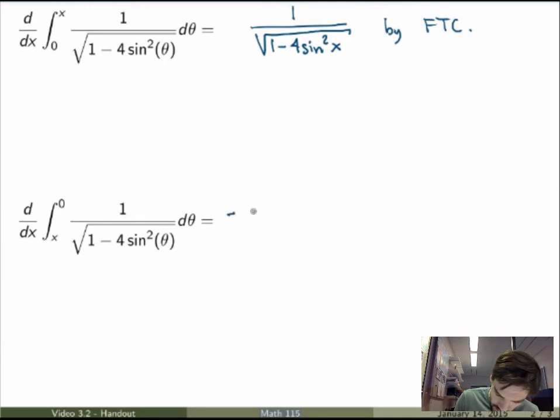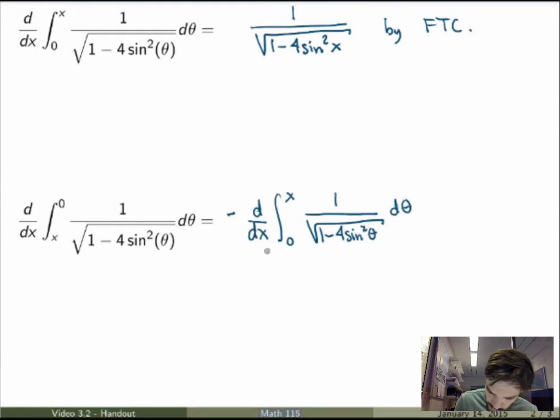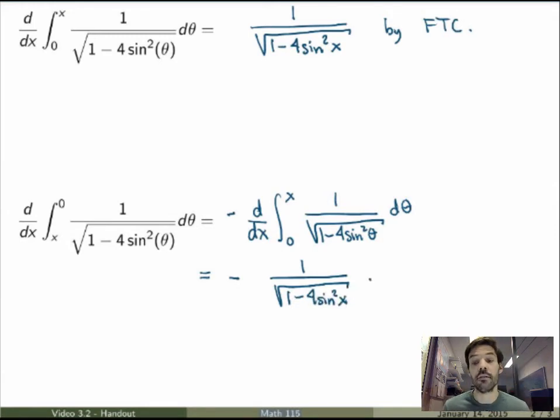So I can rewrite that as minus d/dx of the integral from 0 to x of the same expression. And now I can use FTC to evaluate this integral here. By FTC, this is just the function inside, I still have my minus sign, and then I get the function inside as a function of x. And that would be the final answer, by FTC.